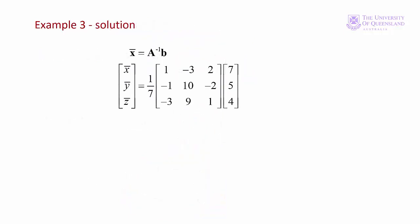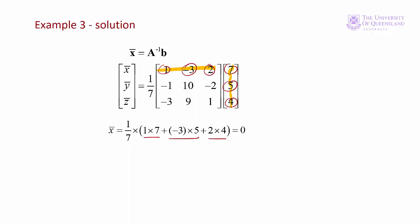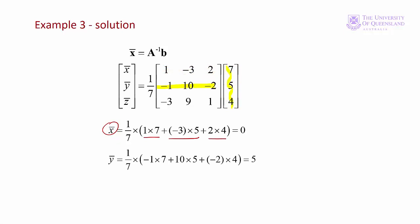The solution to our system of equations is the inverse of A times the vector of right-hand side constants. To find x we multiply the first row by the column vector: 1 times 7 plus minus 3 times 5 plus 2 times 4, so x is 0. We denote the solution with a bar or star. Similarly for y-bar, we have 1/7 times the second row by the column vector; and for z, 1/7 times the third row times the column vector. So x equals 0, y equals 5, and z equals 4.